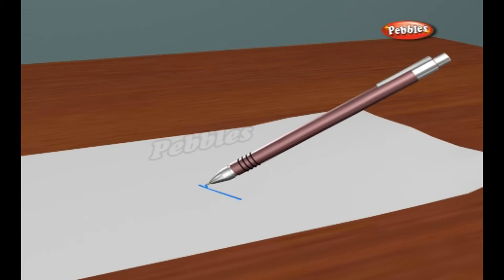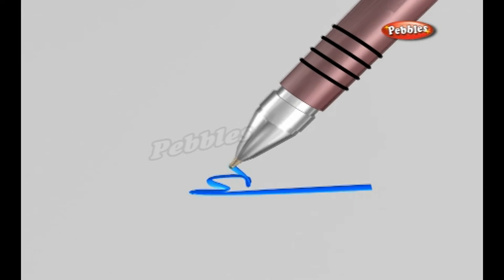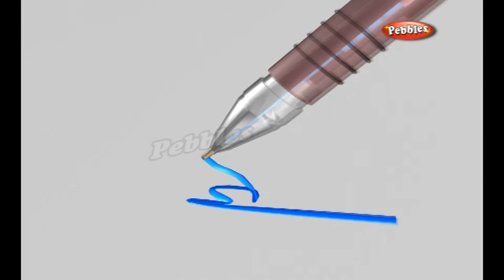As the pen moves across the paper, the ball turns and gravity forces the ink down the reservoir and onto the ball where it is transferred onto the paper.